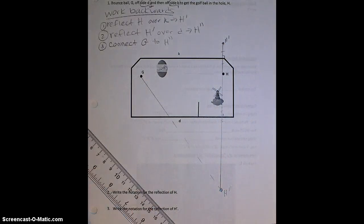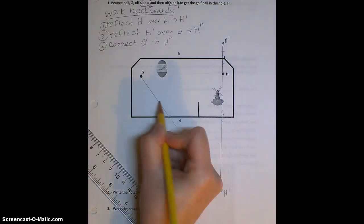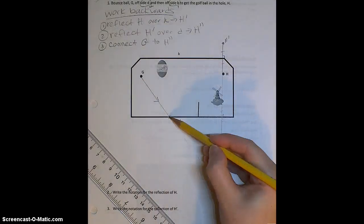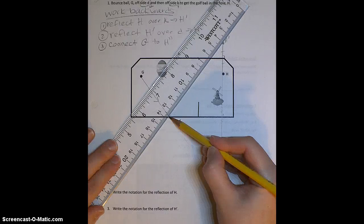And when I do this, I need to make sure that I create this dotted line outside of the golf course, because our mini golf ball is not really traveling through the wall. It's just going to stop right here and bounce to our next reflection point, H prime.